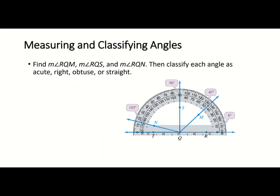Looking at the protractor, they want us to find the measure of angle RQM. Here's R, here's Q, and here's M — the angle starts at zero and goes up to 45 degrees. Since it's 45 degrees, is it acute, right, obtuse, or straight? Hopefully you said acute, because it is an acute angle.